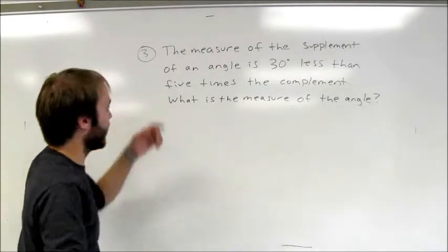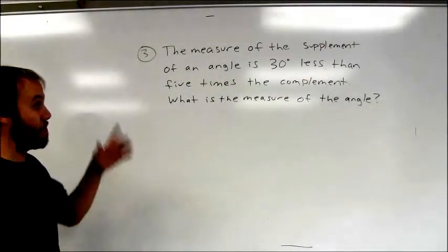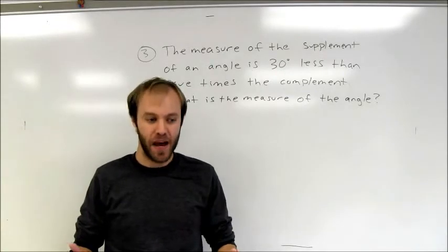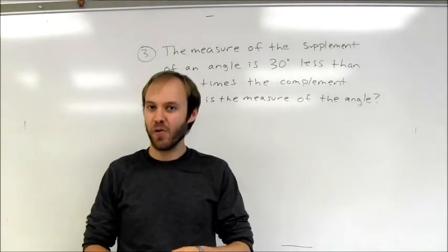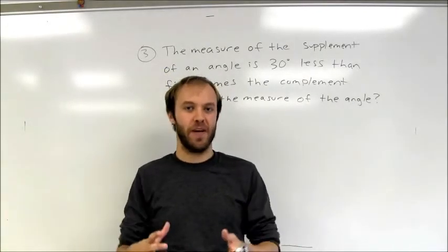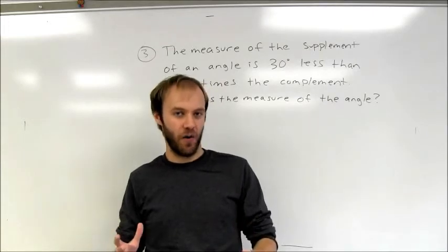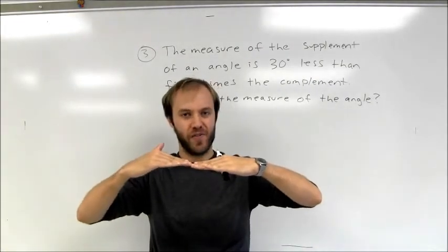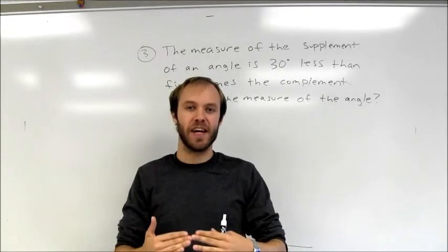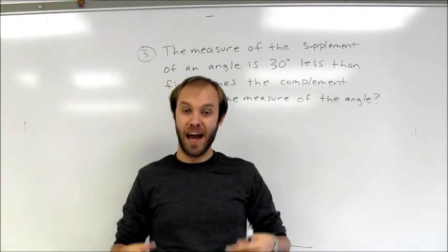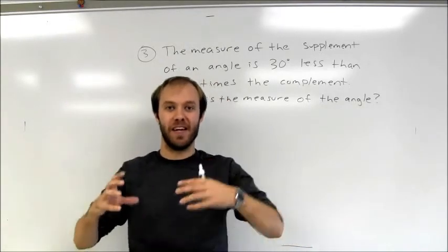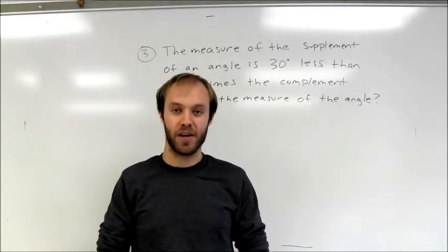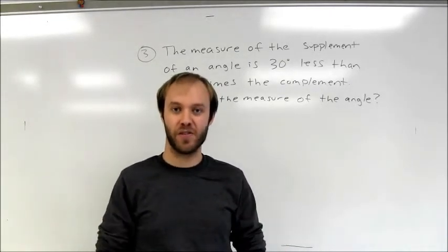In the third example, the statement says the measure of the supplement of an angle is 30 degrees less than 5 times the complement. I'm asked to find the measure of that angle. I'll use a different approach here because the problem involves both supplementary and complementary relationships, making it harder to visualize. Instead of a visual approach, I'll translate the entire statement into algebraic symbols.